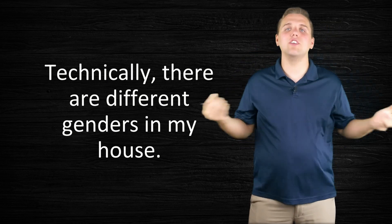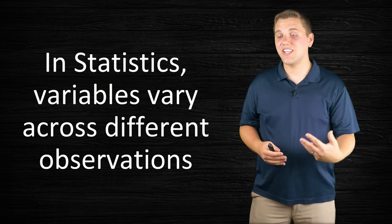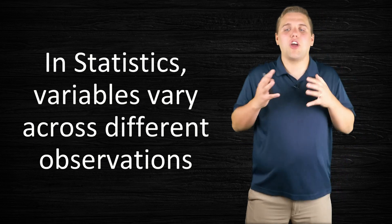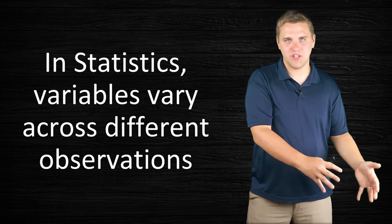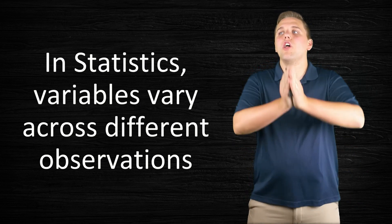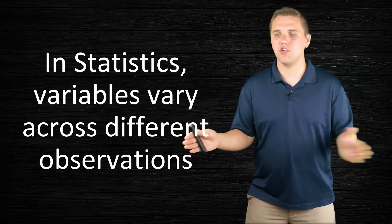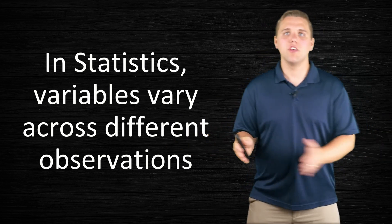It's just that when you look at the genders amongst the list, it looks like there are varying genders amongst this household. In statistics, variables vary across different observations. So when we're talking about varying, we're talking about looking at a bunch of observations. You're looking at a ton of observations, and you notice they're all different. So they vary.